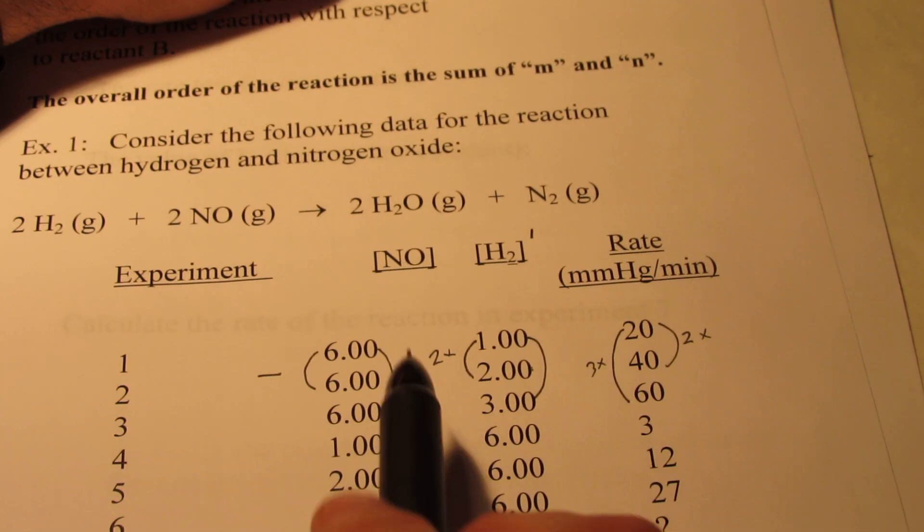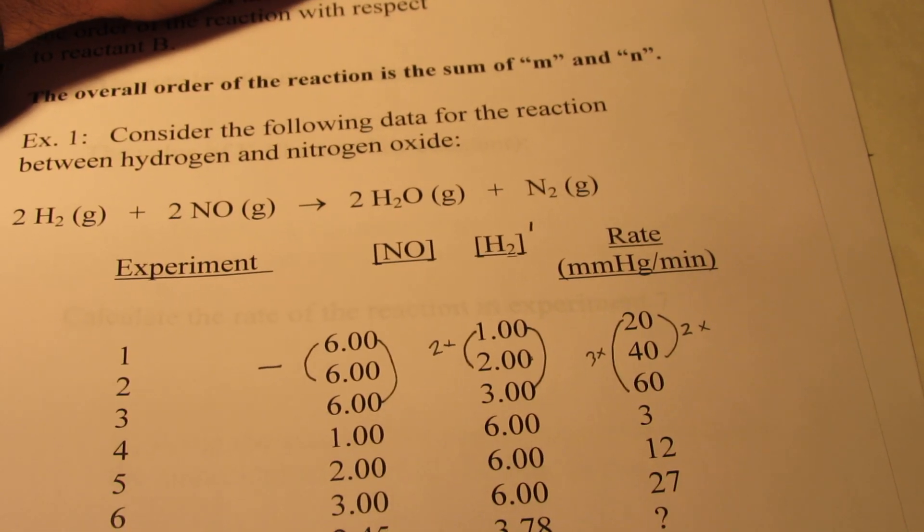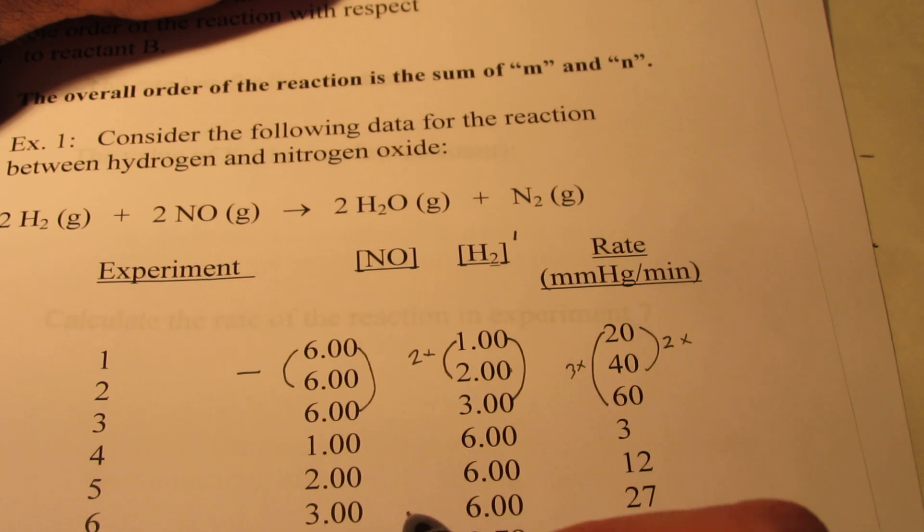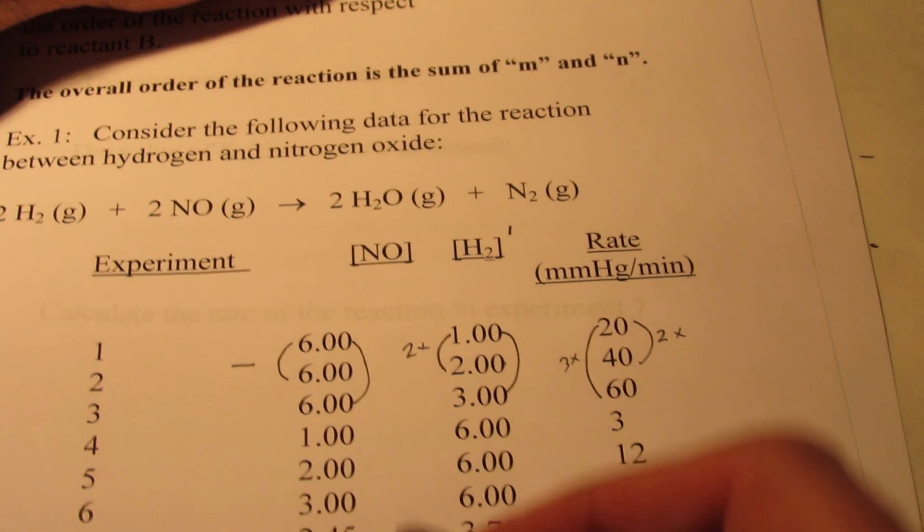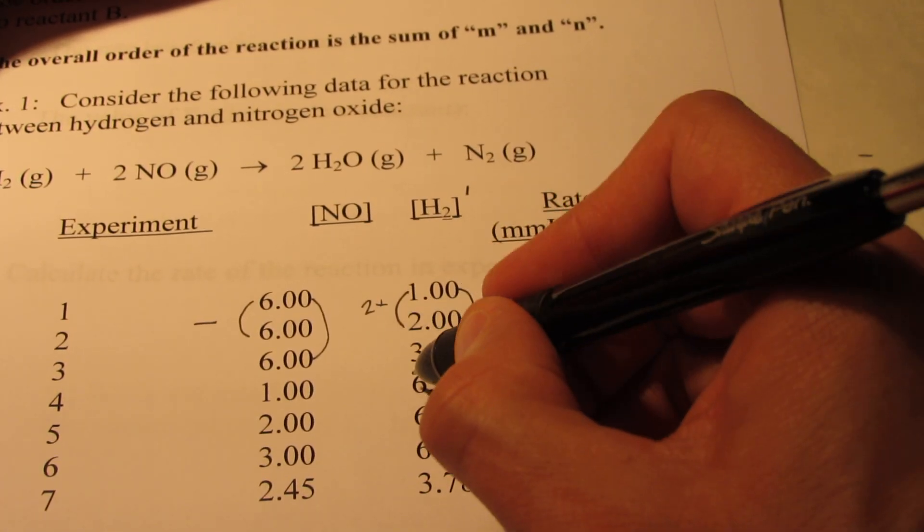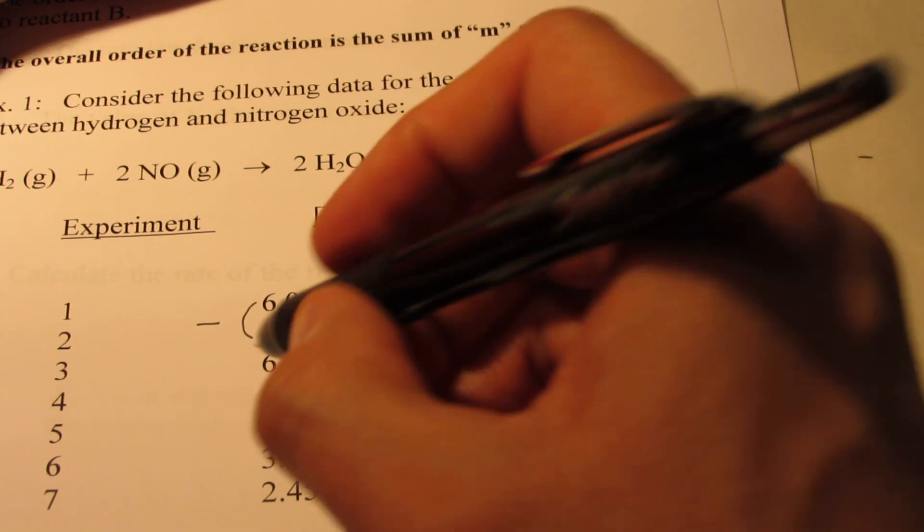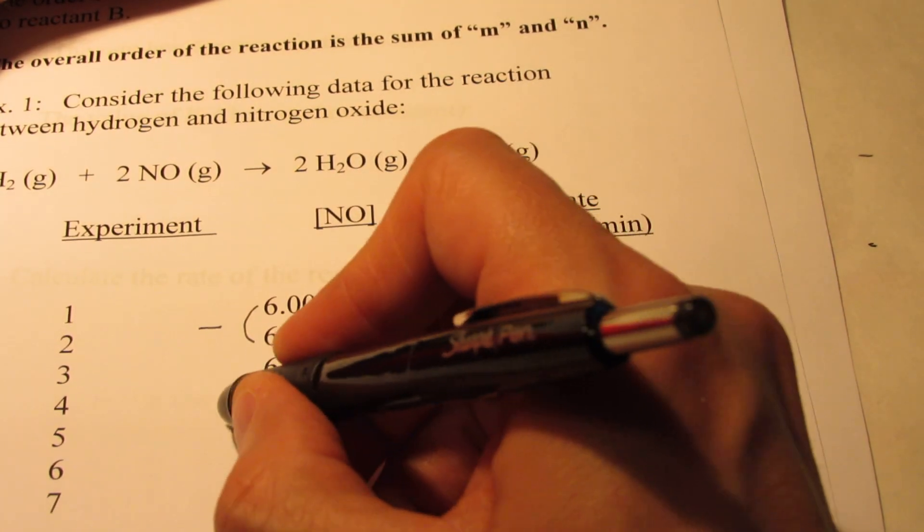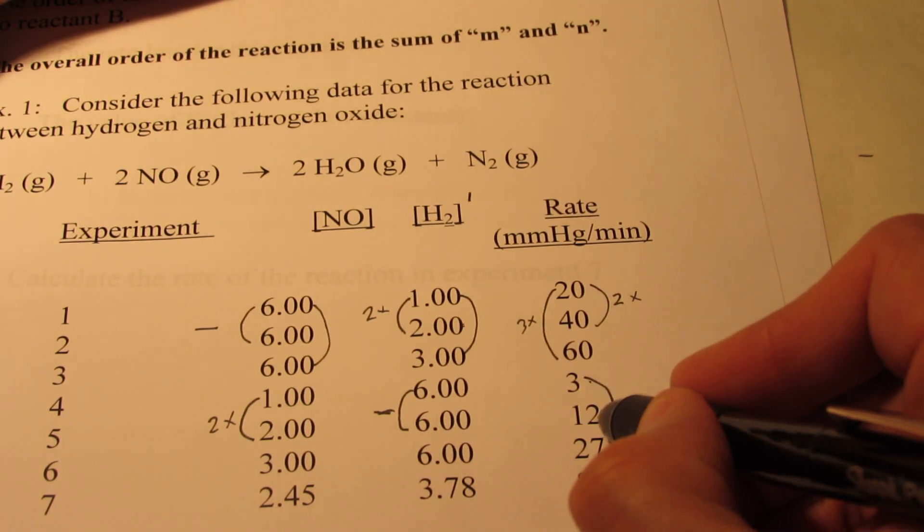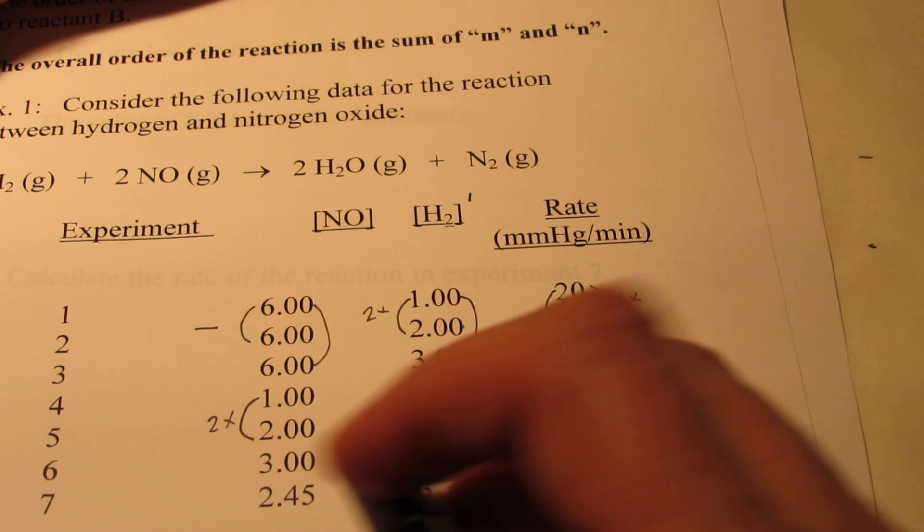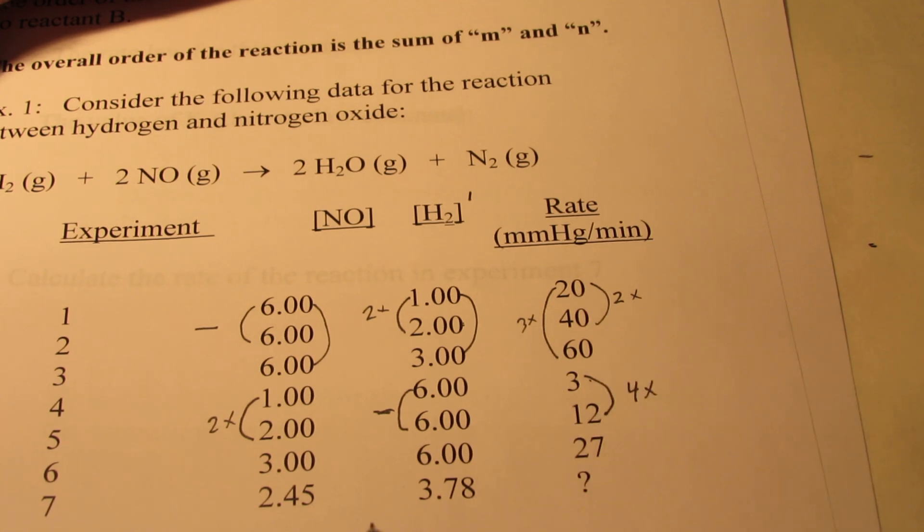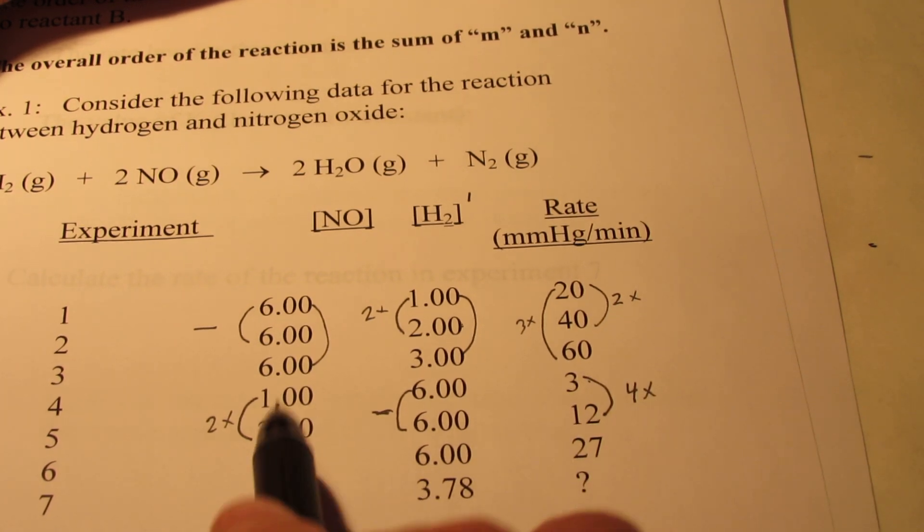What am I going to look at to find out the order of the reaction with respect to the NO? Which experiments can I use? The NO doesn't change in the first three experiments. But it doubles in experiments 4 and 5, where H2 now remains constant. H2 is constant during these experiments, but NO doubles between 4 and 5. What does the rate do? 3 to 12. That's quadrupling. So when NO doubled, and H2 is held constant, the rate quadrupled. What type of relationship is that? What order is that? Is it 0, 1, or 2?